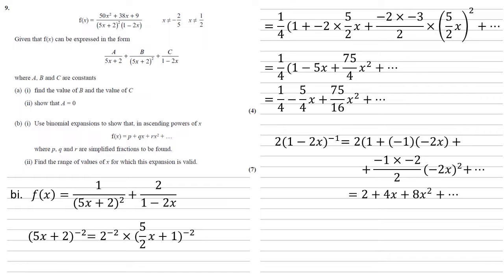Simplifying and expanding, we get 2 plus 4x plus 8x squared. So bringing them together, we've got our quarter minus 5 quarters x plus 75 sixteenths x squared plus 2 plus 4x plus 8x squared, which gives us a final answer of 9 over 4 plus 11 over 4x plus 203 over 16x squared.